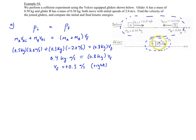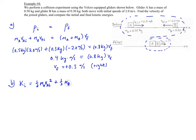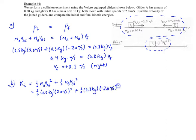Since we know all the velocities and masses, we can calculate kinetic energy to compare before and after. The kinetic energy initially is one-half mass of A times velocity A initial squared, plus one-half mass of B times velocity B initial squared. Substituting: one-half times 0.5 kilograms times 2 meters per second squared, plus one-half times 0.3 kilograms times negative 2 meters per second squared — that negative is squared — giving us 1.6 joules.